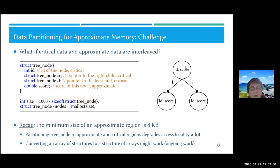Because the minimum size of an approximate region is four kilobytes, and the size of an instance of tree_node is 20 bytes. We have to somehow divide 20 bytes to four kilobyte regions, which causes a lot of access locality degradation. Or we can convert an array of structures into a structure of arrays, which might work, but this is ongoing.